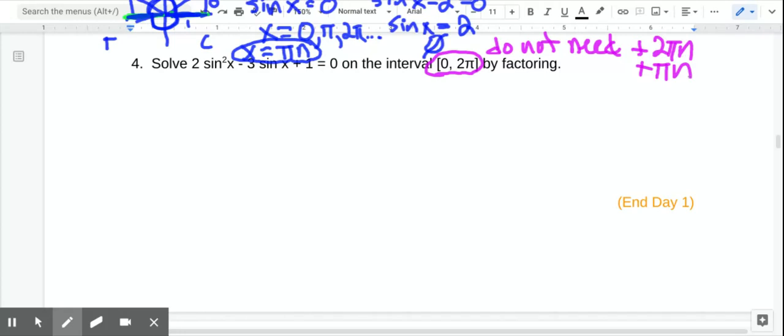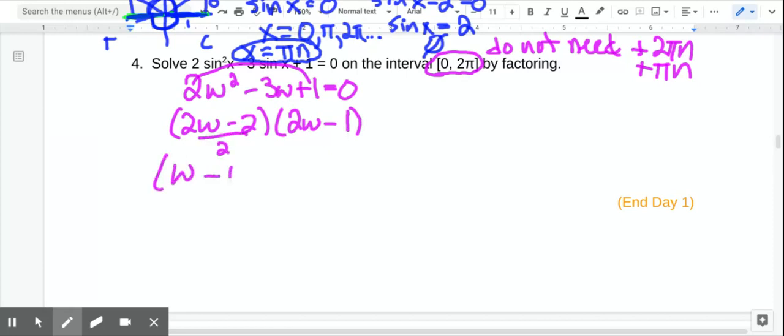So we want to solve this by factoring. If you like the w factoring, that might be a good thing here. So this is 2w squared minus 3w plus 1. We're going to have to umbrella factor this. So both of these are going to be negative. So 2 and 1. Divide that by 2. So we get w minus 1 and 2w minus 1.